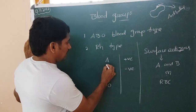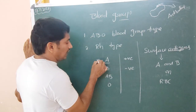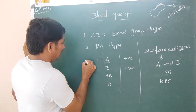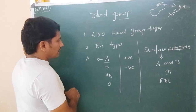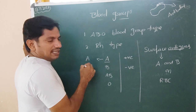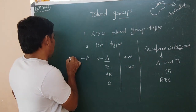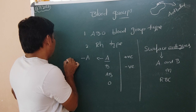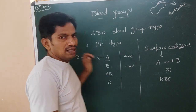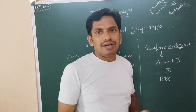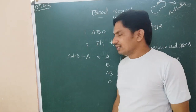Now, A group — the A group red blood corpuscles have antigen A on the RBC surface. Similarly, in the plasma, they have anti-B antibody, which is present in the plasma of that particular person.